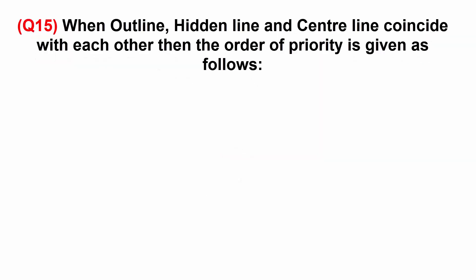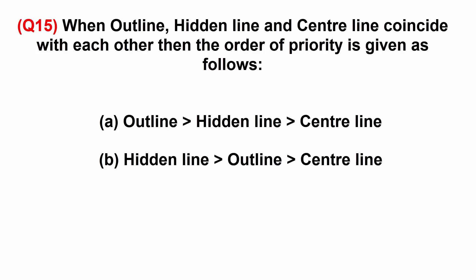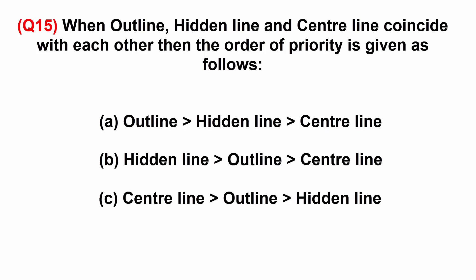When outline, hidden line, and center line coincide with each other, then the order of priority is given as follows: A: outline, hidden line, center line. B: hidden line, outline, center line. C: center line, outline, hidden line.